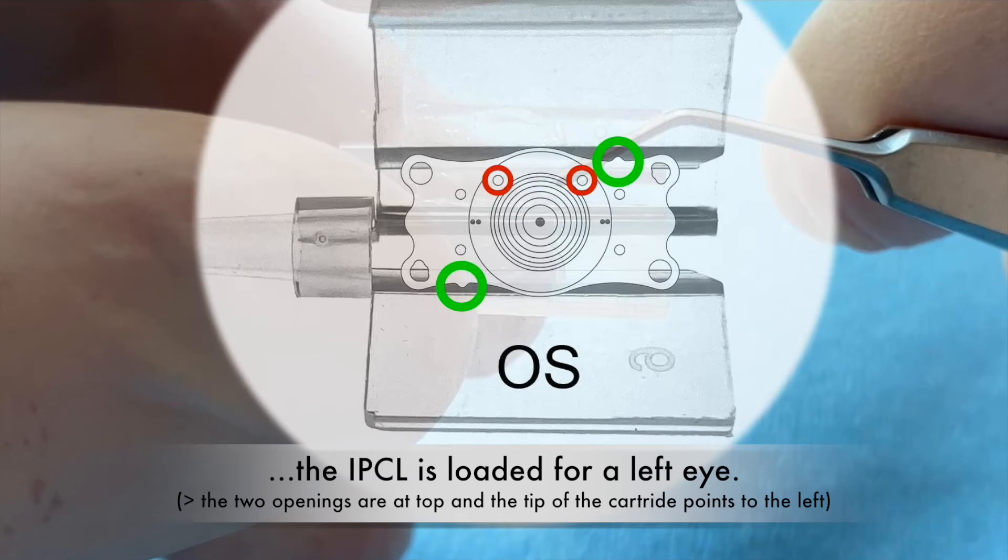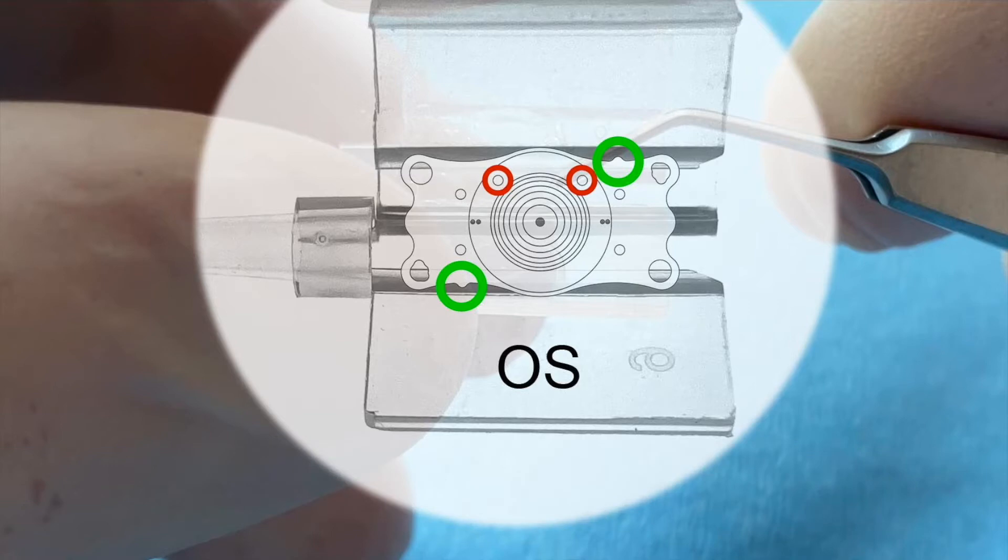For a right eye, the two openings should be at the bottom or the tip should point to the right.